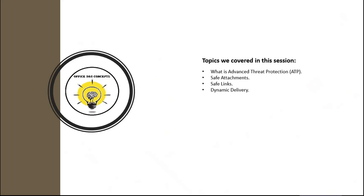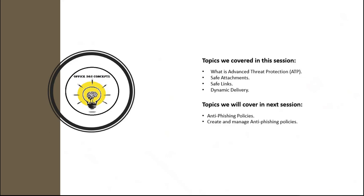So in this particular session, we discussed what is Advanced Threat Protection or ATP. We discussed how Safe Attachments and Safe Links scan attachments and URLs and how they protect organizations from malicious contents. I have shown you how you can create or manage Safe Attachments and Safe Links policies from Microsoft Defender for Office 365. In the next session, I will be discussing how we can configure anti-phishing policies to help protect organizations from phishing and spoofing attacks.